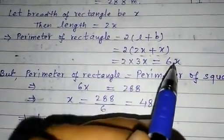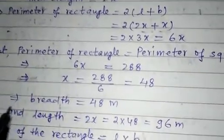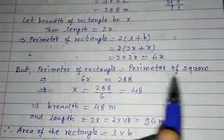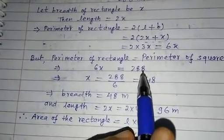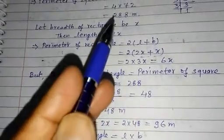But it is given in the question perimeter of rectangle is equal to perimeter of square. That is 6x equal to 288. This is the perimeter of rectangle, perimeter of square we have already found out here.